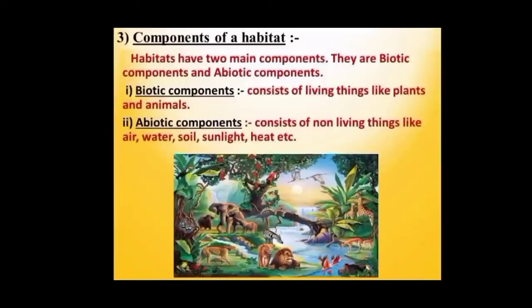Every habitat has certain components on which it depends. Living things like plants and animals constitute the biotic components of a habitat. Whereas non-living things like air, water, humidity, soil, sunlight and heat constitute the abiotic components. In this picture, you can see both the abiotic and biotic components living together in an ecosystem.